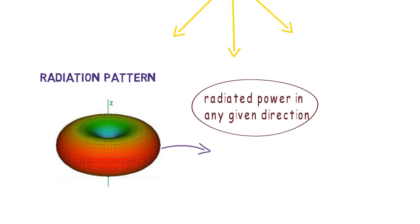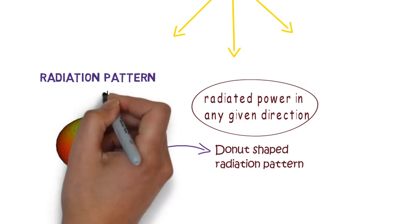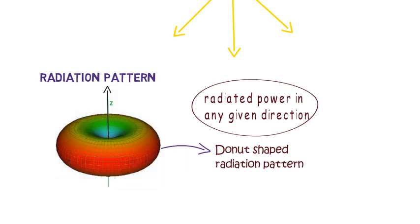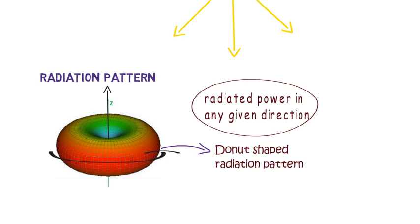Here this is an example of donut shaped radiation pattern. In this case, along the z-axis, that is directly overhead the antenna, there is very little power transmitted, but perpendicular to the z-axis the radiation is maximum. For different antenna structures, a variety of radiation patterns can be observed.